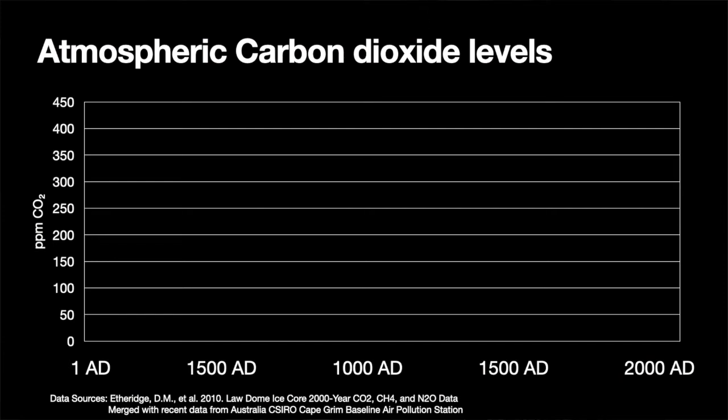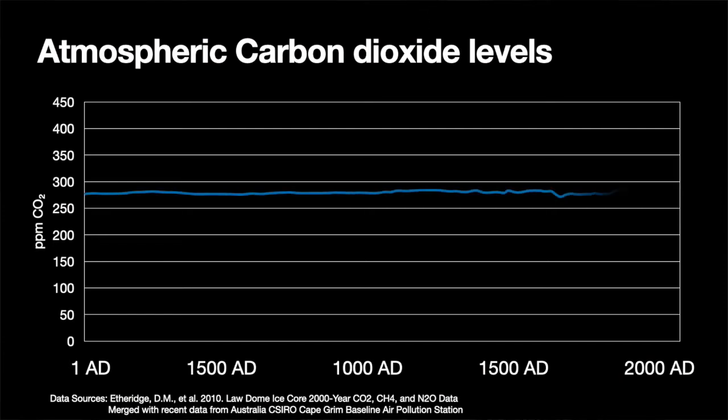But the natural greenhouse effect adds 33 degrees Celsius to our planet's surface temperature. And if you look at the second most powerful greenhouse gas, carbon dioxide, the levels have gone up by 50% just in the last couple hundred years.